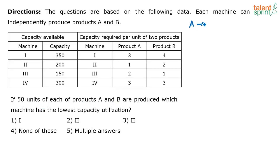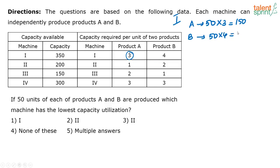For machine one, to produce one unit of A I require three units of capacity, so to produce 50 units of A I will require 50 × 3 = 150 units of capacity. To produce 50 units of B, I require four units of capacity per unit, so 50 × 4 = 200 units. Put together, to produce A and B I require 350 units, which equals the total capacity of machine one - so I am utilizing maximum capacity.